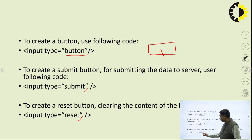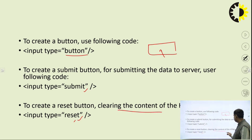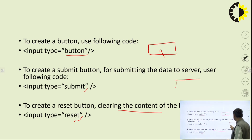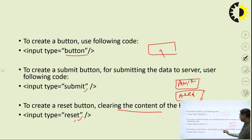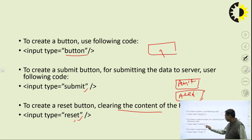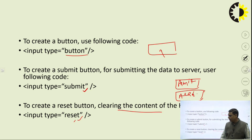The reset button is used to clear the content of the form elements. Suppose in the text box you have written some name, and in the text area you have written something — instead of deleting all the data manually, you click the reset button and all the data will be cleared. So submit sends data to the server, and reset clears the form data.